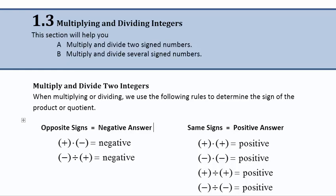When multiplying or dividing, we use two simple rules to figure out the sign of the product, which is multiplication, or the quotient, which is division. Opposite signs are going to give us a negative answer. So if I take a positive number times a negative number, those signs are opposite, and I'm going to get a negative answer.